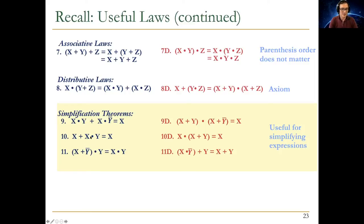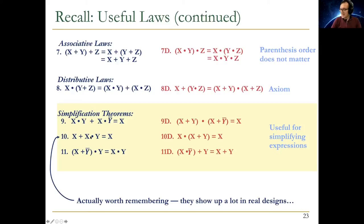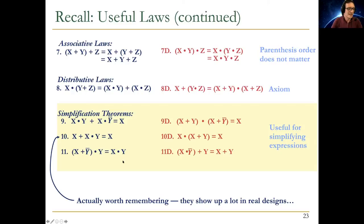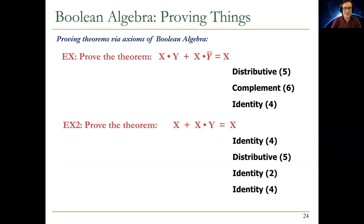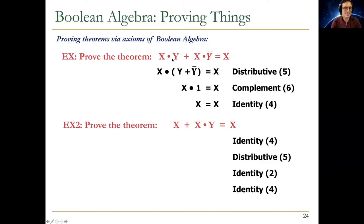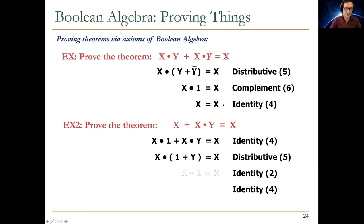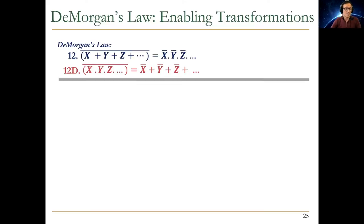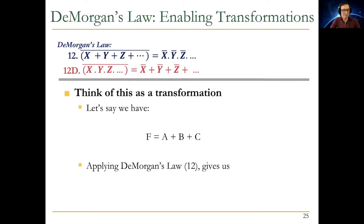Another very useful theorem appears frequently in logic design. You can prove these using boolean algebra. For example, if you have a circuit where you compute (x AND y) OR (x AND y-bar), you can reduce it to just x using boolean algebra. We also talked about De Morgan's laws.